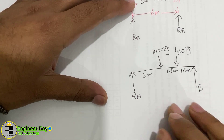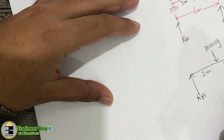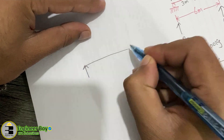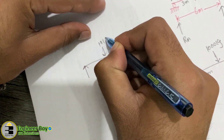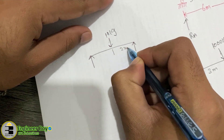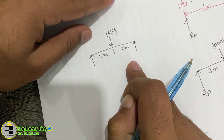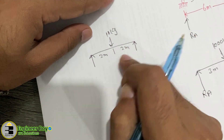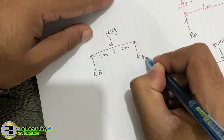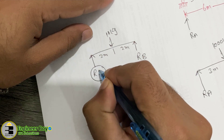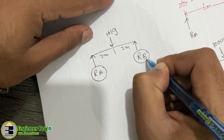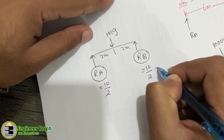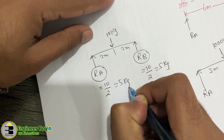This is a non-symmetric beam, so determining its reactions is not as simple as for symmetric beams. For a symmetric beam — for example, a 10 kg load at the midpoint of a 4-meter span (2 meters each side) — half the load is supported by each reaction: RA = RB = 10/2 = 5 kg.